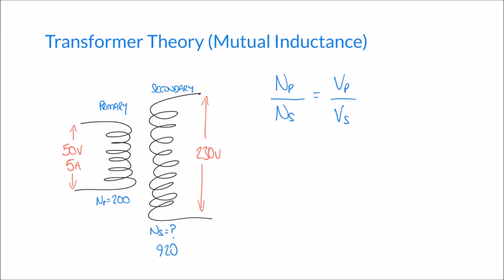The current is also governed by the ratio of the number of turns. We extend our formula to include a current term: Np over Ns equals Vp over Vs equals Is over Ip. Note that the current term is inverted — it's the secondary current over the primary current, not primary over secondary. If we only need to find the secondary current, we can discard the middle section and use Np over Ns equals Is over Ip.